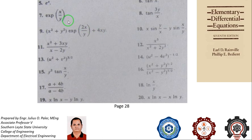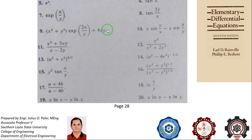For exercise five, e to the x has no degree — only variables have degree. Tangent of x has no degree. Constants like 7 and 8 also have no degree. For number 9, x squared plus y squared is 2nd degree, e to the 2x over y has no degree, and 4xy is also 2nd degree. Therefore, as a function, this is homogeneous to the 2nd degree. For the remaining exercises, identify the degree and homogeneity on your own.